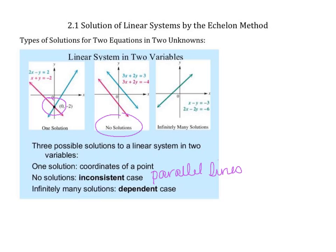Or we can have infinitely many solutions. This is the dependent case, meaning that it's the same line. So if you were to graph two lines and they ended up being the same line, they would be right on top of one another.